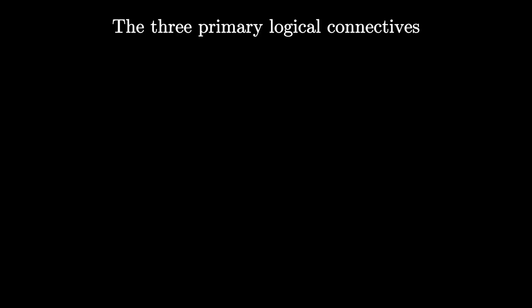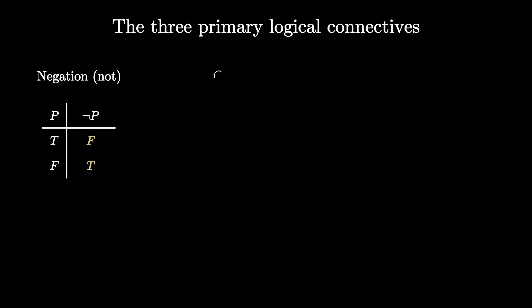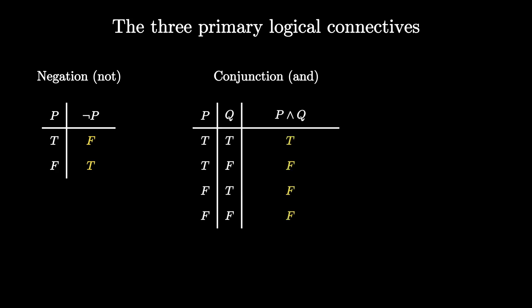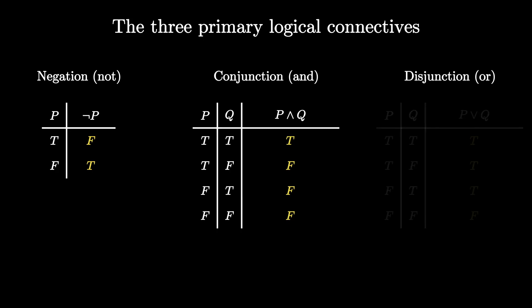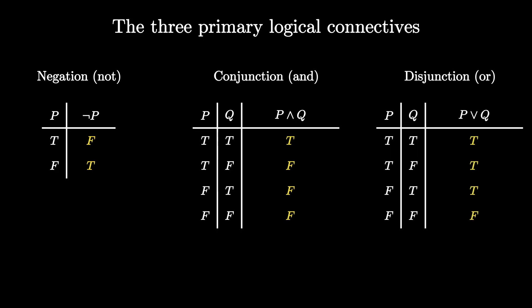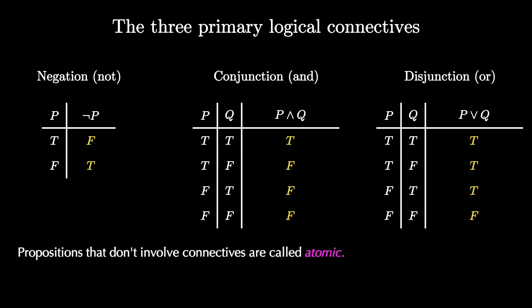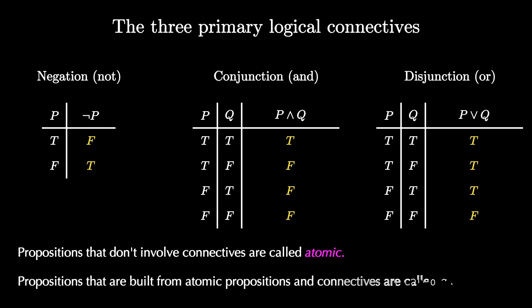So we have seen the three primary logical connectives: the negation, which is a unary connective; the conjunction, or AND, which is a binary connective; and the disjunction, or OR, which is also a binary connective. Here are the truth tables. Propositions that don't involve connectives will be called atomic, and those that are built from atomic propositions and connectives will be called molecular.